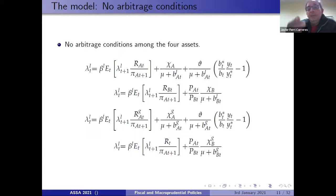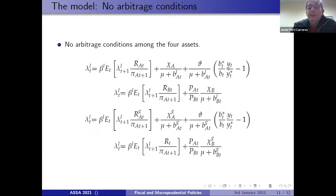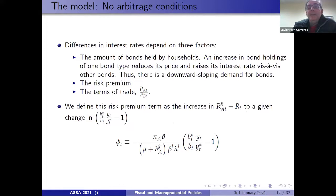From the first-order conditions, we obtain four equations that introduce no-arbitrage conditions among different assets. There are different interest rates for different bonds. The variable r_t stands for the reference interest rate set by the central bank, which we assume is the same as the safe asset — the German government bond. The interest rate is related to the amount of bonds held and also to an index linked to the risk premium. Differences in interest rates depend on three factors: the amount of bonds held by households generating a downward sloping demand, the risk premium, and the terms of trade affecting demand for foreign bonds.